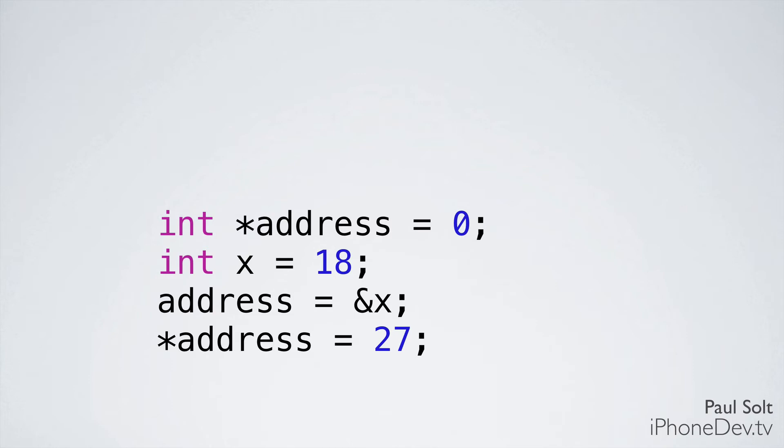Alright, so I talked about pointers before and now let's go through a little demo on how they work. So we have four lines of code here. It is a little bit complex. That's okay if you don't understand it the first time. We'll be revisiting pointers a lot because we'll be using them extensively in Objective-C.